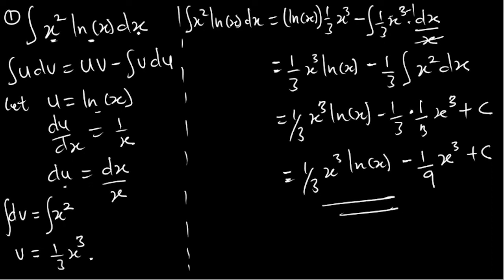It's very simple. Once you know how to select your u and how to select your dv to obtain v from it, it's very necessary. If you choose your u in a complicated way, your answer is going to be very difficult to obtain.